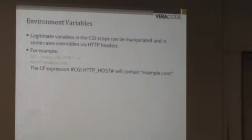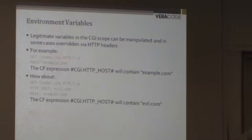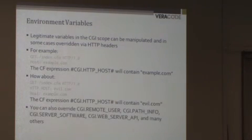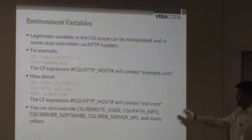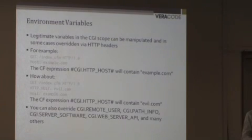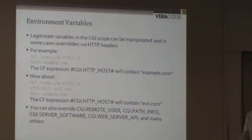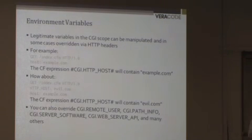Environment variables. The CGI scope in ColdFusion lets you set a lot of variables that you wouldn't normally be able to set. This example looks at the host header — HTTP_HOST will contain example.com, but if you provide a real host header and also a header named HTTP_HOST, that will override what the real host header is. Additionally, other CGI member variables that on other platforms you can't touch as an end user — like remote user, path info, or server software — in ColdFusion you can override just by providing an HTTP header called server_software. The exploitability of these is probably not that high because it involves modifying request headers, but you should be aware that these things can happen and not consider those variables to be trusted by default.